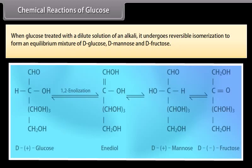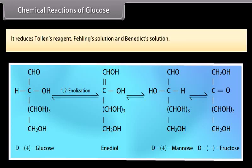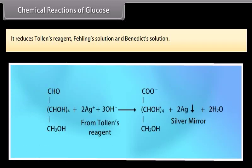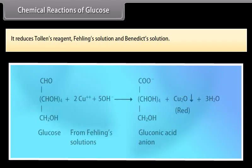When glucose is treated with a dilute solution of an alkali, it undergoes reversible isomerization to form an equilibrium mixture of D-glucose, D-mannose, and D-fructose. It reduces Tollens' reagent, Fehling's solution, and Benedict's solution.